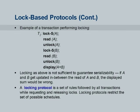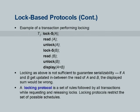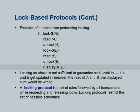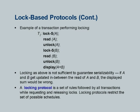Here is an example of a transaction performing locking. If you are running in SQL, this is what would happen below the SQL interpreter. The SQL interpreter issues read, write, and lock calls to the lower layers of the database system. This transaction is locking A in S mode, reading A, then unlocking A, then locking B in S mode, reading B, unlocking it, and then displaying A plus B.